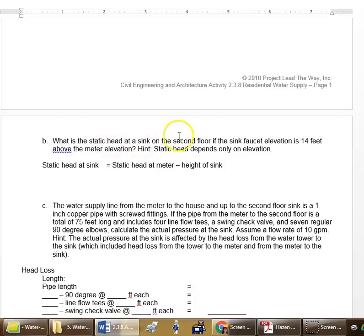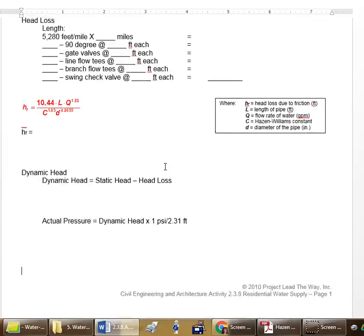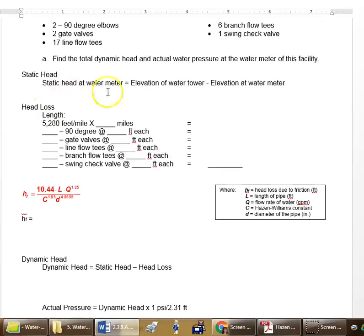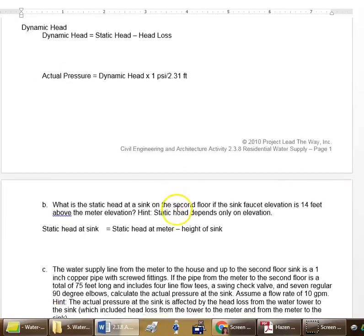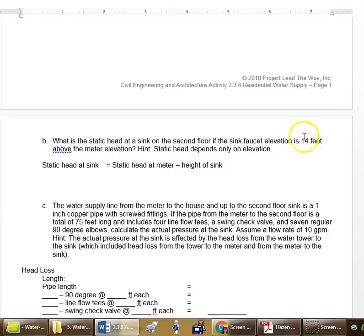What is the static head at the sink on the second floor if the sink faucet elevation is 14 feet above the meter elevation? So what we need to do to find the static head of the sink is take the static head at the meter, which we had up here, static head at the meter, this number, and minus the height of the sink. So do that to find the static head at the sink.